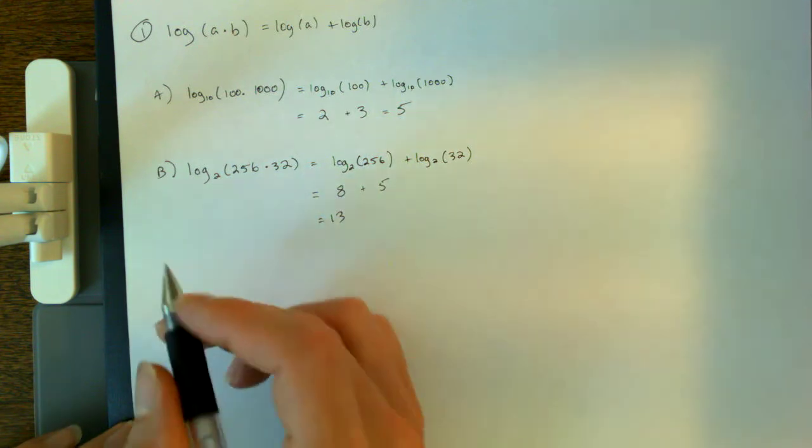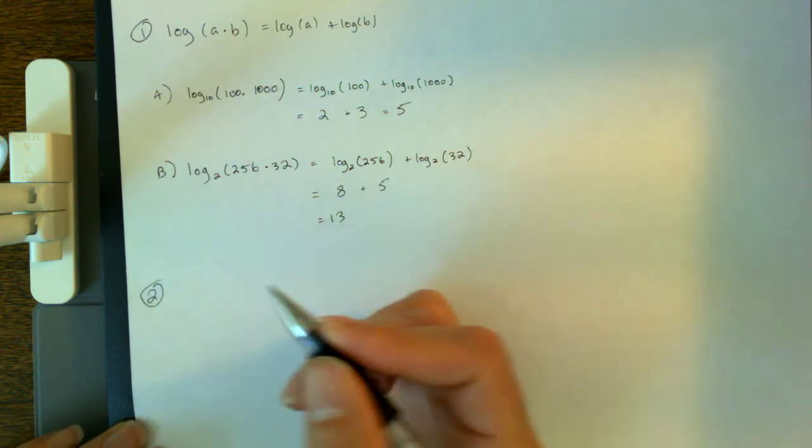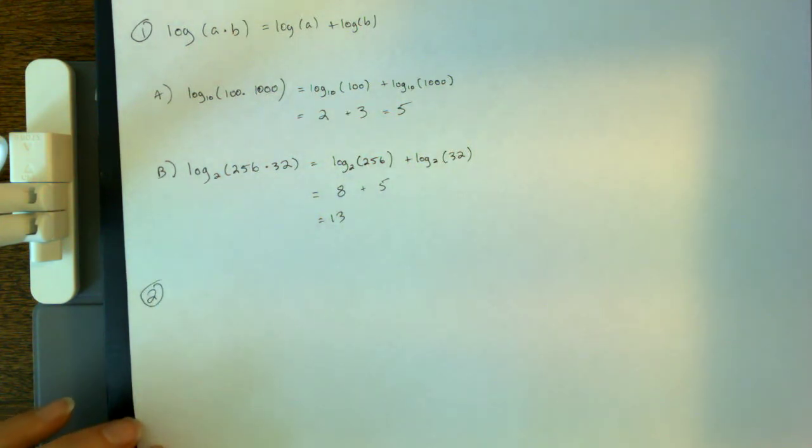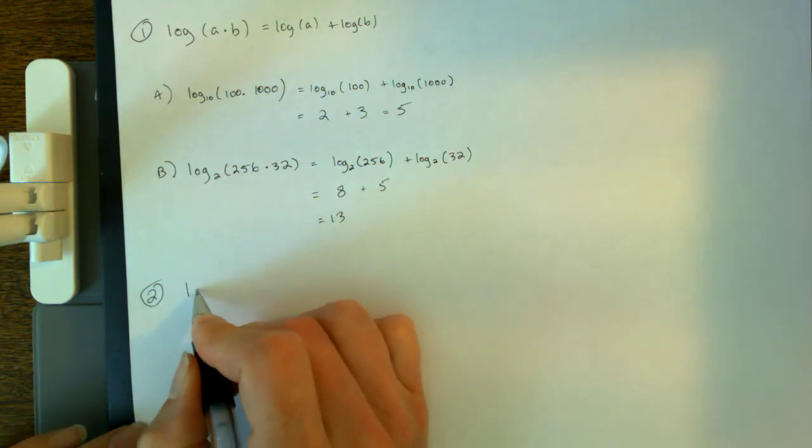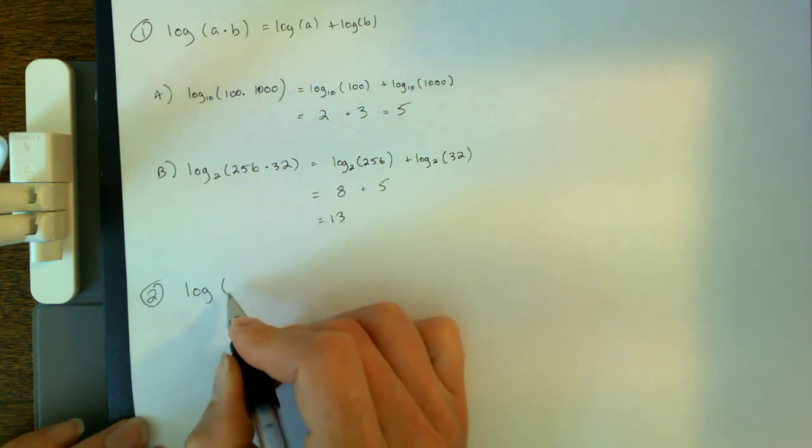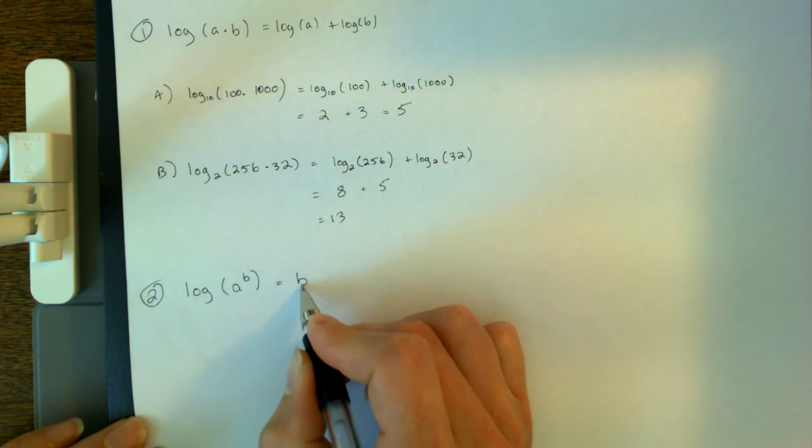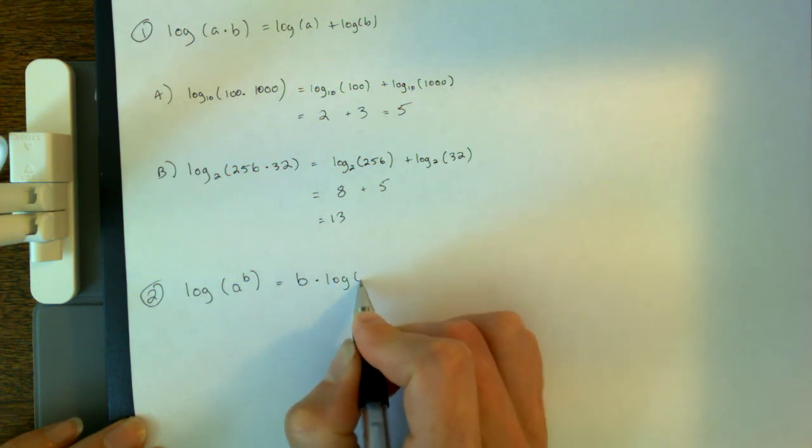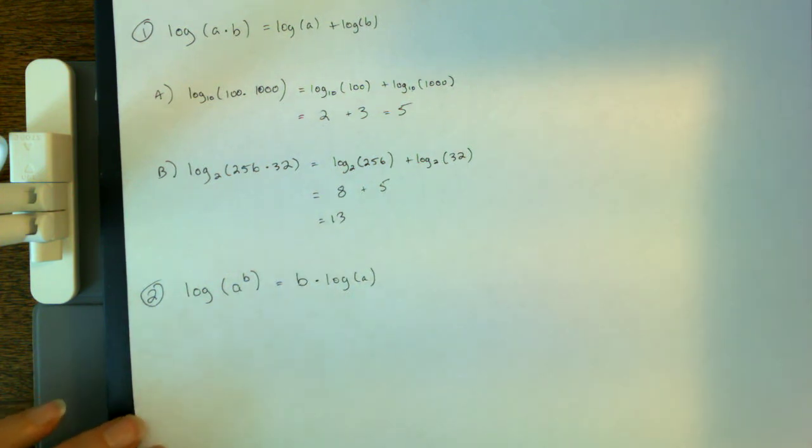All right, let's try our second rule right here. Rule number 2. Again, lots of rules for logarithms, but this is undoubtedly, for our purposes at least, the second of our two important rules. And it's the following. It's that if I have the logarithm of a power, log of a to the power b, this is the same thing as b times log of a.